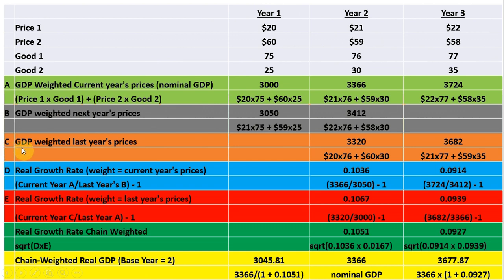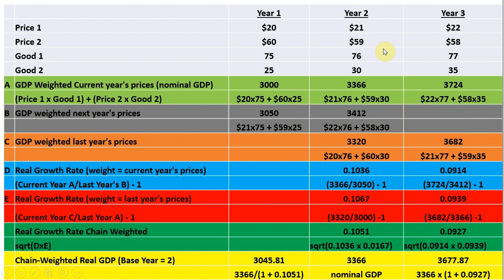Moving down to row C, we calculate GDP weighted in last year's prices. In year one, we don't have year zero prices, so that's blank. In year two, I take the output in year two and value it at year one's prices: 20 times 76 plus 60 times 30. For year three, I take the output in year three and value it at year two's prices: 21 times 77 plus 59 times 35.